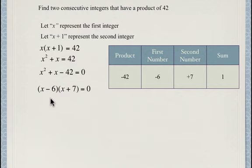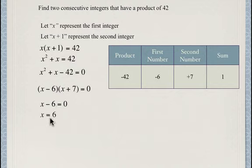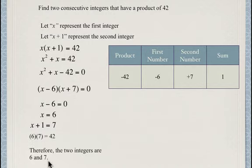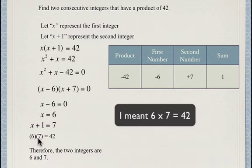We consider two cases. If x minus 6 equals 0, then x equals 6, since 0 times any number is 0. Our two integers are x and x plus 1, so if x equals 6 then the integers are 6 and 7. We can verify: 6 times 7 equals 42.